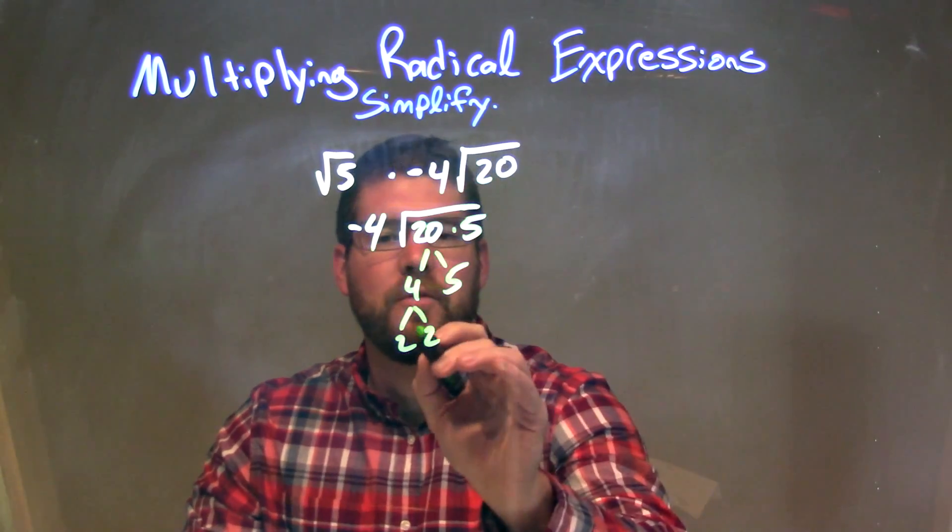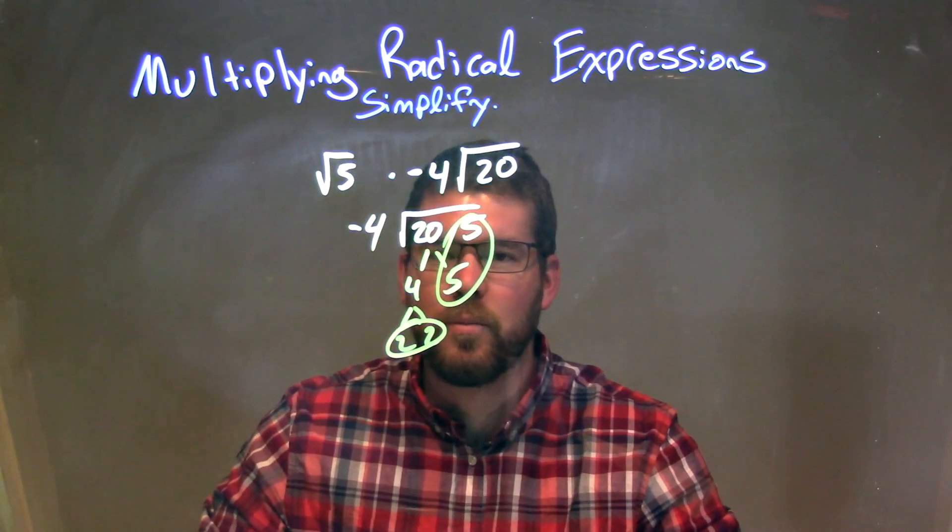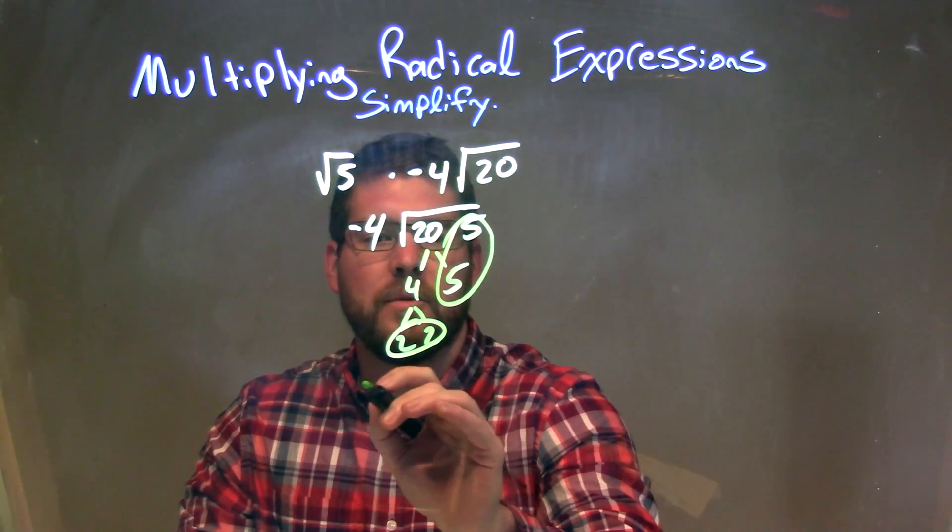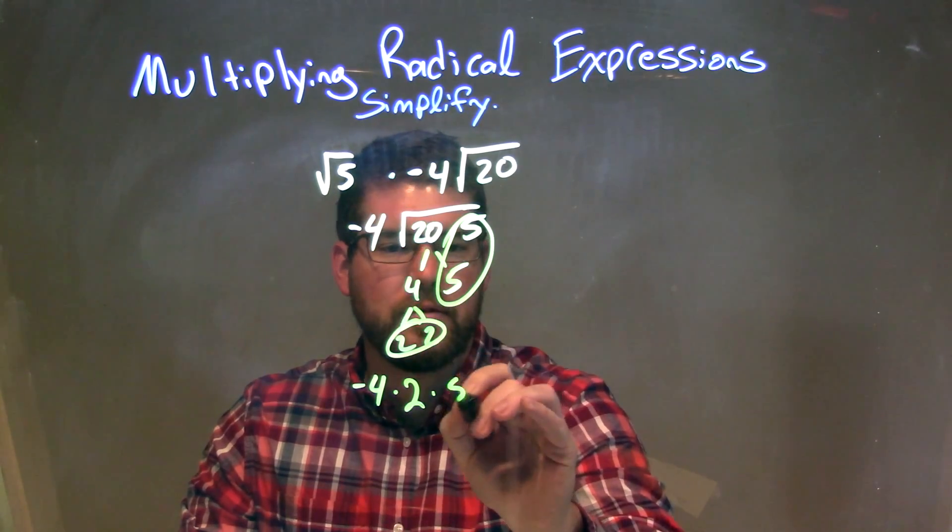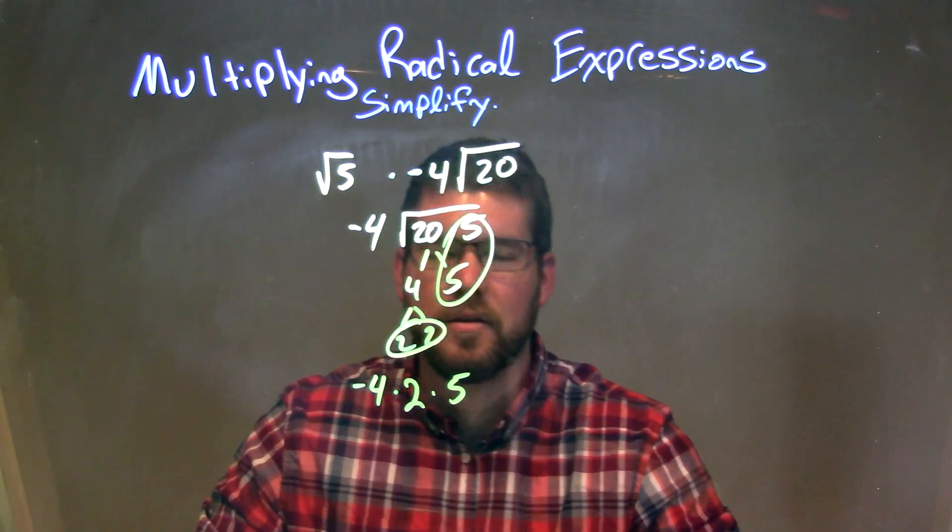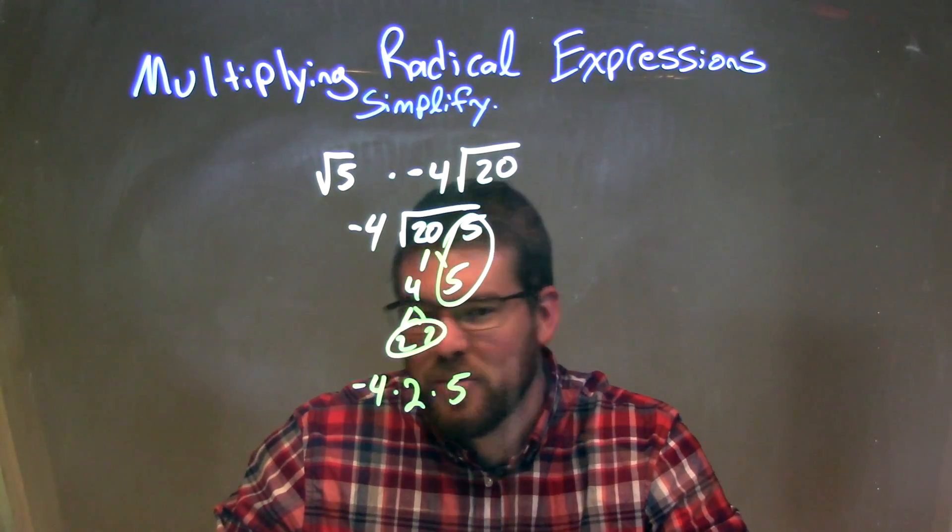Well, let's circle our pairs. We have a pair of 2s right here and we have a pair of 5s. We bring them to the outside as one per root. So we have negative 4 times the pair of 2s times the pair of 5s, represented by a single number outside the square root. There's nothing left inside the square root, so we don't have the square root anymore.